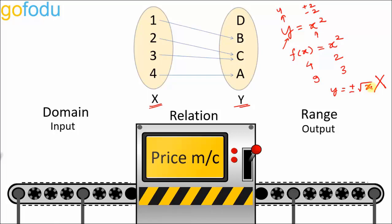A function can also be represented using sets. We have a set X and a set Y, with arrows from set X to set Y mapping the elements. Here f(1) = b, f(2) = c, f(3) = c. There can be two values of x giving the same value of y — this is allowed. All the values that x can take constitute the domain of the function.